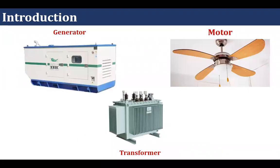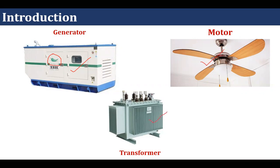These are the examples. From the symbol, you can recognize — it is manufactured by a company. This is a fan, an example of a motor. And this is a transformer. In the last lecture series, we have gone through transformer in detail.